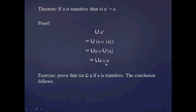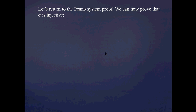One interesting thing to point out from this theorem: basically what it's doing is taking the predecessor of whatever I stick in there. We saw in the previous slide that the union of 3 was equal to 2. So basically what this operation is doing is reversing the successor operation.